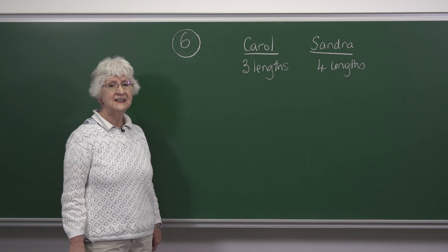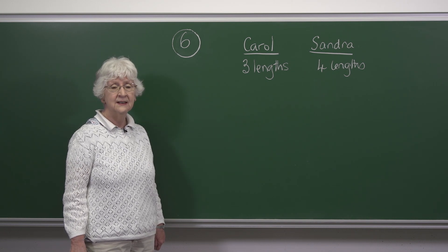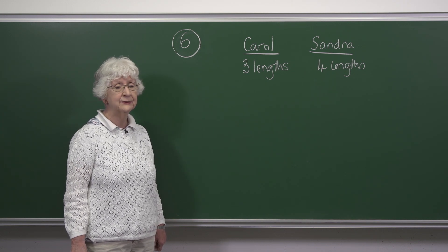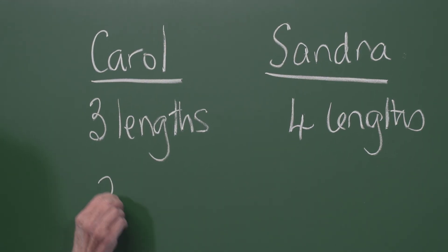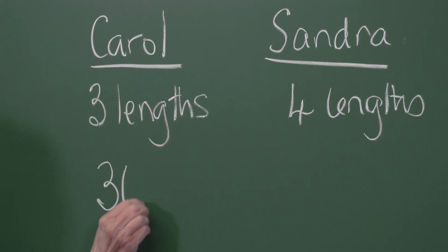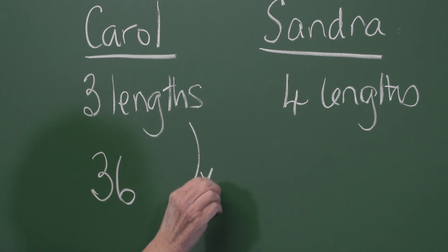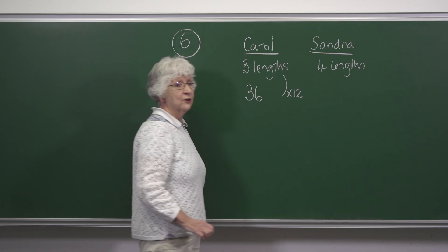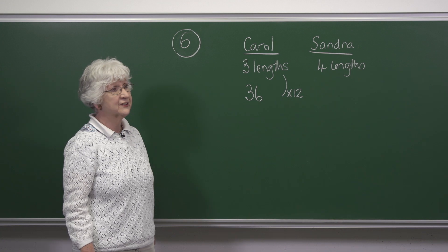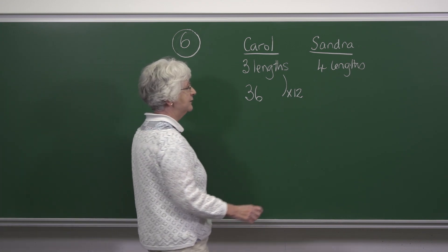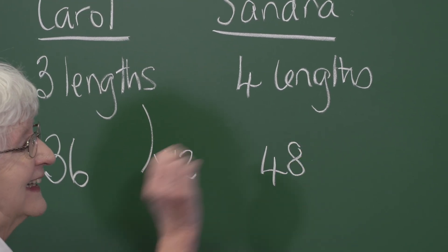In this question, every time Carol swims three lengths, Sandra swims four. Carol swims 36 lengths, which means she's done 12 lots of three lengths. So therefore Sandra does 12 lots of four lengths, which is 48 lengths.